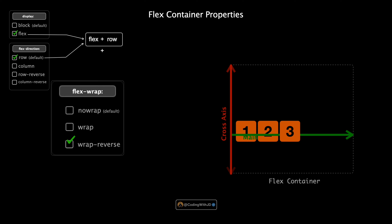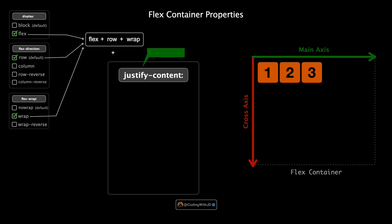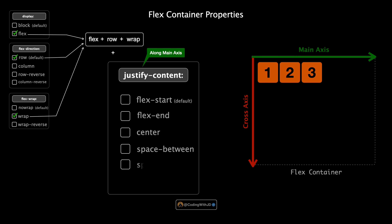Another incredibly useful flexbox property is justify-content. This property helps us align our items along the main axis, which can be horizontal or vertical depending on flex-direction. Let's explore the different values it can take: flex-start, flex-end, center, space-between, space-around, and space-evenly.